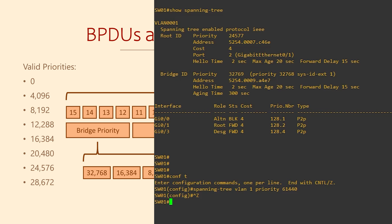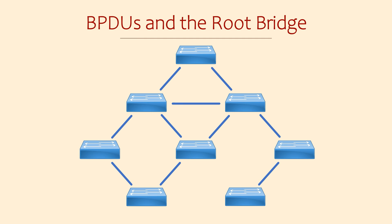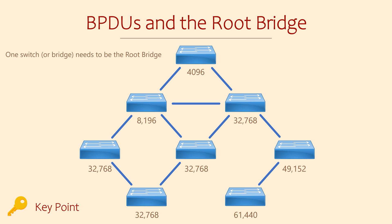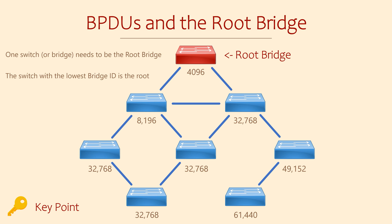The Bridge Priority and the switch MAC address make the switch ID. This is one of the pieces of information that switches share with each other when they start sending and receiving BPDUs. Spanning Tree uses a tree-like structure, with the main links branching out to other switches. One of the switches in the topology will become the root bridge — this is the most important place in the topology, and it is decided based on the bridge ID. The switch with the lowest bridge ID becomes the root bridge. We can influence this by changing the bridge priority, since we can't change the switch's MAC address. If two switches have the same priority, the lowest MAC address breaks the tie.